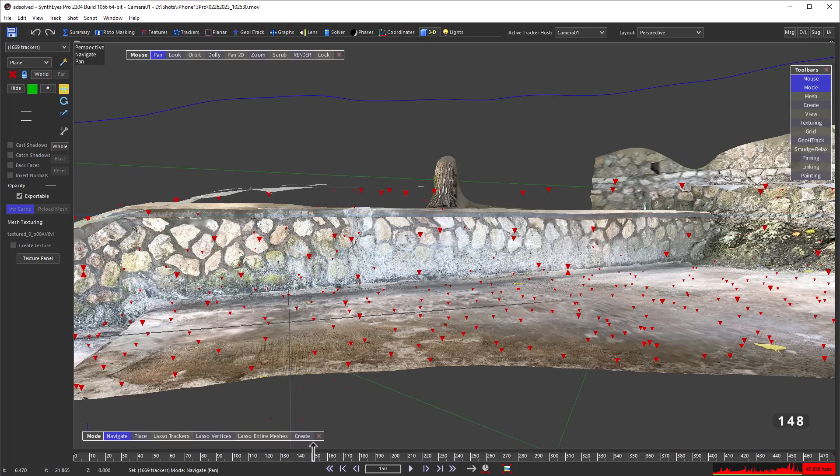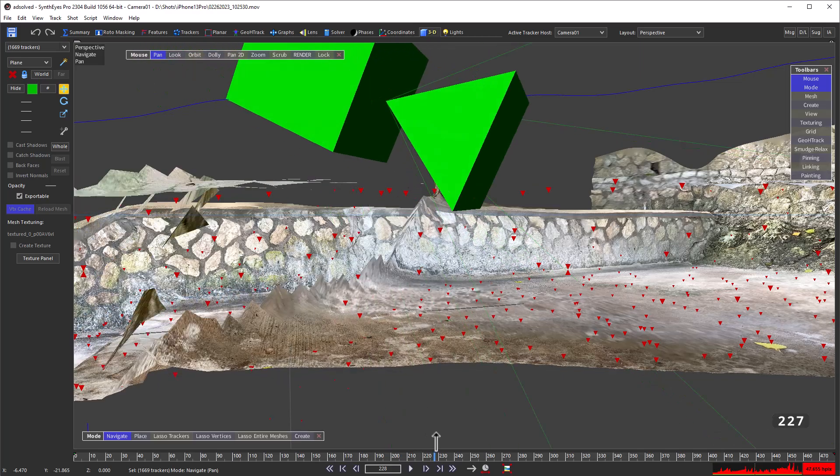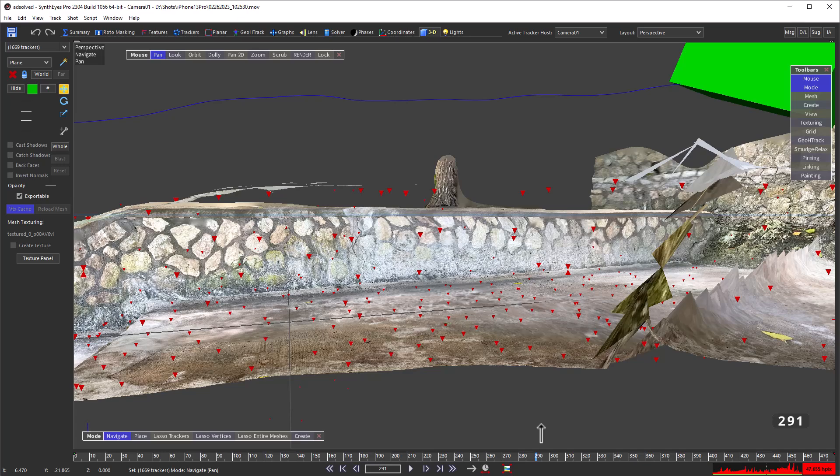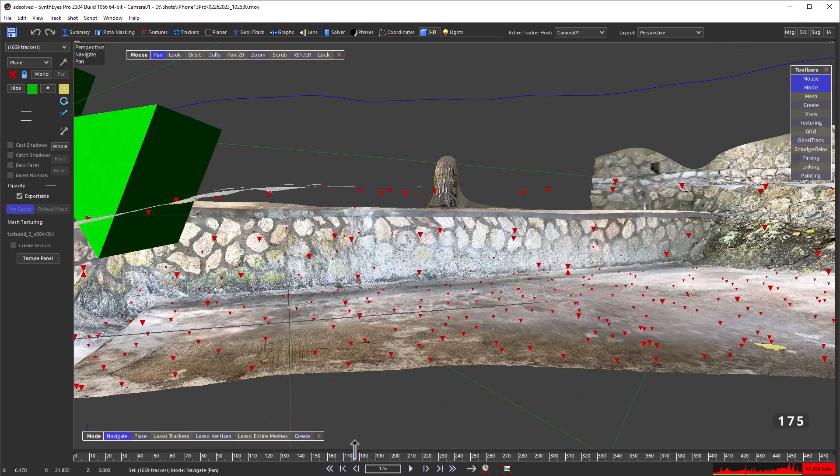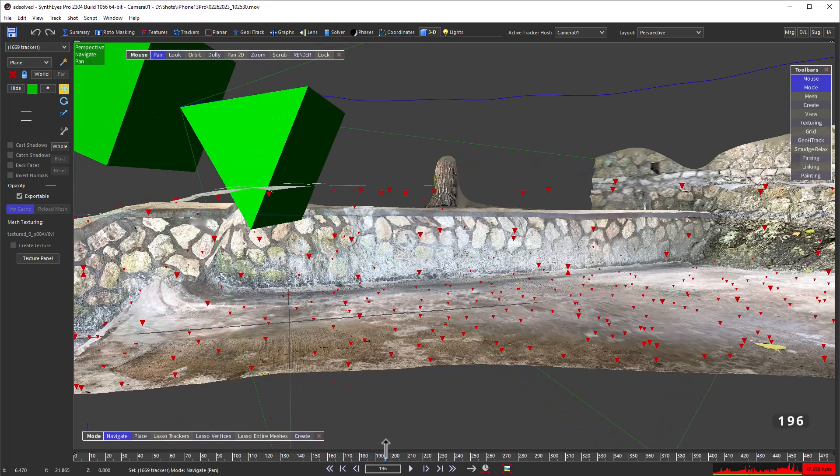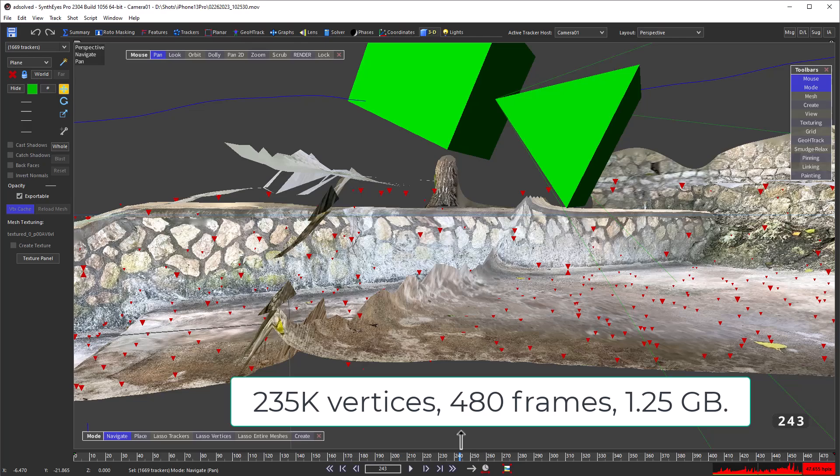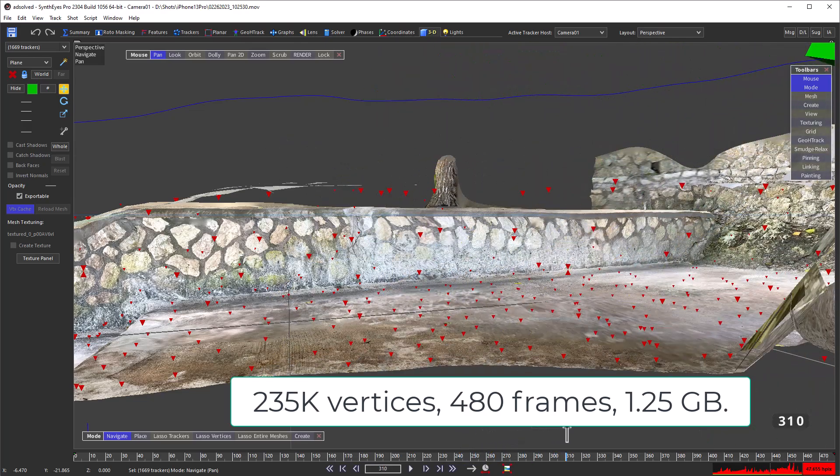If you want to add meshes to the scene, you need to add them first in SynthEyes, then export them so that you have the compensating vertex cache required to make them line up right. You might need to parent 2D graphics to specific vertices on the mesh.